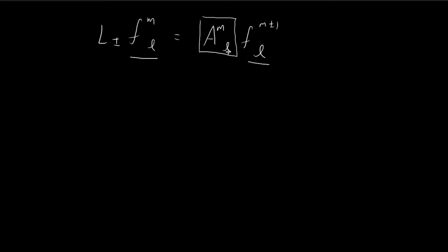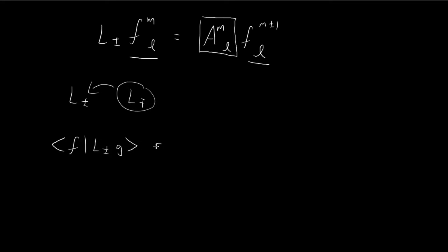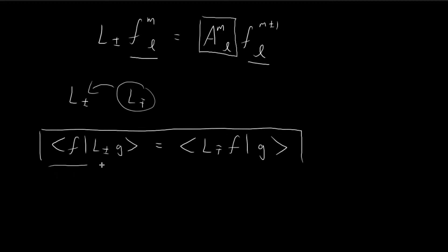In order to find the formula for this factor, we need to first show that the Hermitian conjugate of L± is actually L∓. When we say this is the Hermitian conjugate, that means the inner product ⟨F | L± G⟩ equals ⟨L∓ F | G⟩. If we can establish this relationship, it will be a proof that L∓ is the Hermitian conjugate of L±, and this will allow us to eventually derive the formula for A.